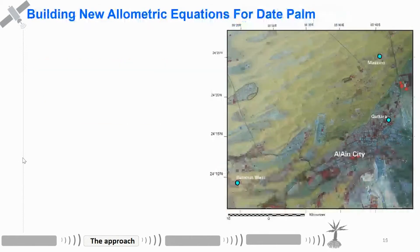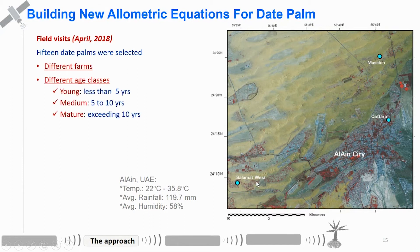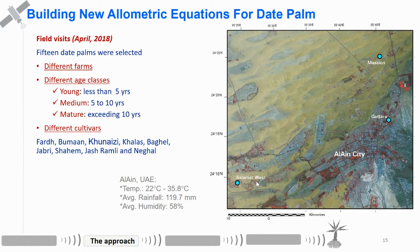Let's start with developing the allometric equation. For developing the allometric equation, we selected 15 date palms from different farms close to Al Ain, in Masakin, Qattara, and Salamat. They are also different in age classes — young, medium, and mature — so three age classes were considered. We tried our best to represent the different cultivars of date palm in the United Arab Emirates, because there are also different cultivars or varieties used in building the allometric equation.